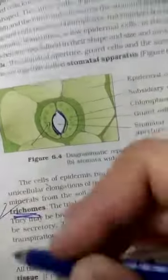Look at here the cuticle, guard cell, stomatal apparatus, and these are the stomata and trichomes. Everything I am going to explain you with the help of the notes.